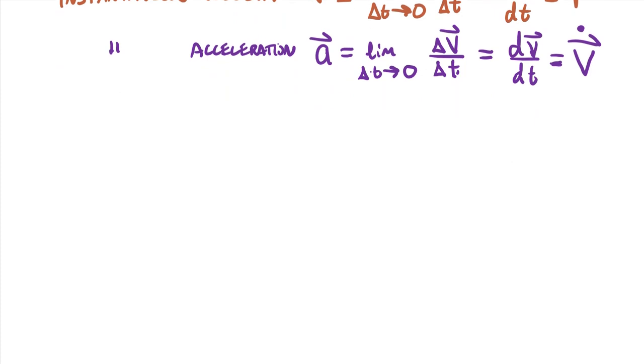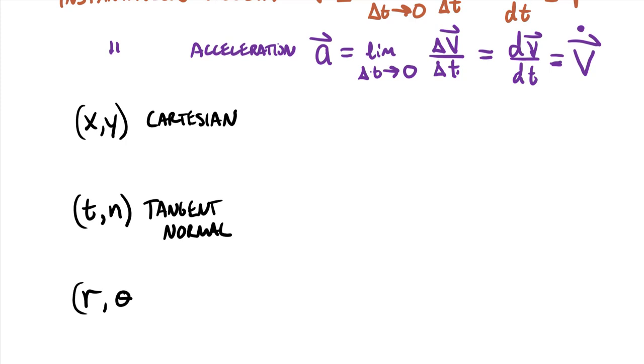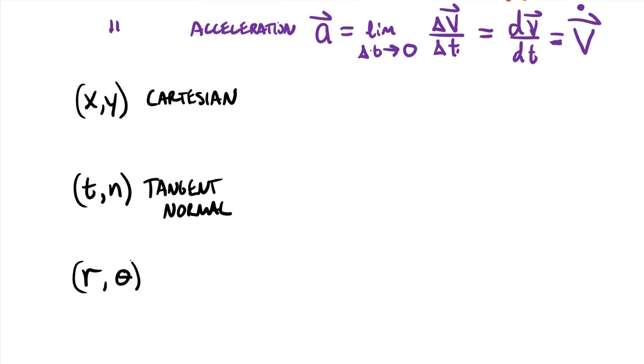So the coordinate systems that we use in dynamics, there's three different ones. One of those is going to be the Cartesian or the x,y coordinate system. We also have the tangent normal coordinate system, t comma n. And then finally, the r theta, which fundamentally is like the two-dimensional portion of the spherical coordinate system. It also works out that it's also the two-dimensional version of the cylindrical coordinate system. So this is either spherical or cylindrical.